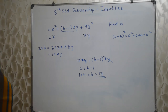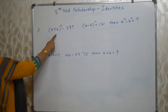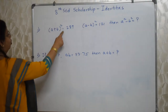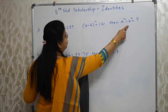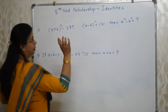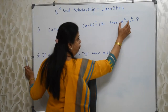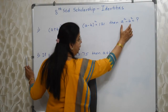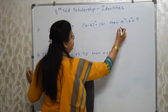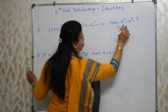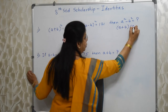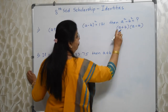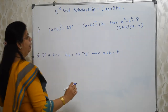So easy! Next: (a+b)² = 289 and (a−b)² = 121. Find a² − b². You must know that a² − b² = (a+b)(a−b). Since (a+b)² = 289 = 17², we get a+b = 17. Since (a−b)² = 121 = 11², we get a−b = 11.